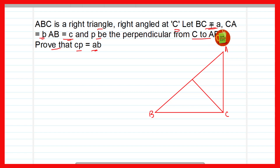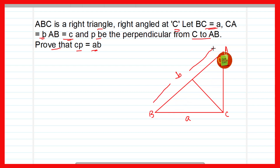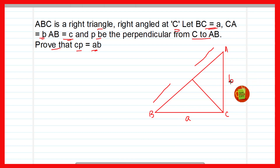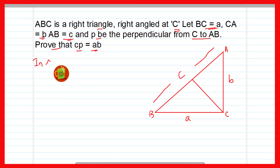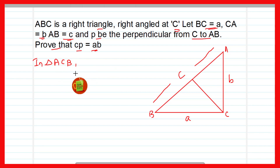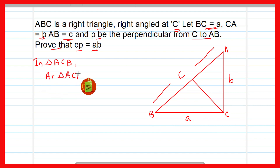BC is equal to a, CA is equal to b, and AB is equal to c. P is the perpendicular from C on AB and we have to prove that CP = ab/c. First we will take triangle ACB. Here we can apply the area formula to find the area of triangle ABC.